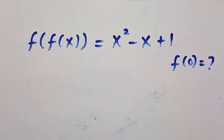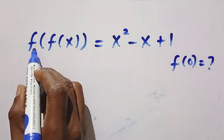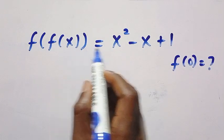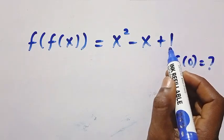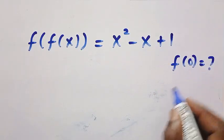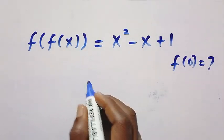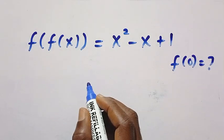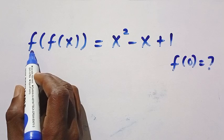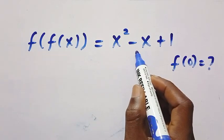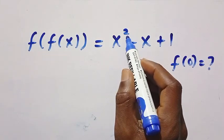Good day viewers, you are welcome. How to solve these nice functional equations? We have f of f of x equals x squared minus x plus 1. And what is f of 0? This is a composite function, because we have a function inside another function. And on this side, we have a quadratic because of the power of 2.